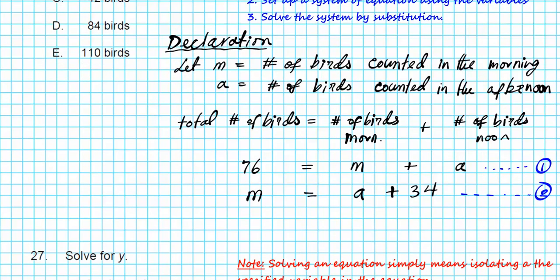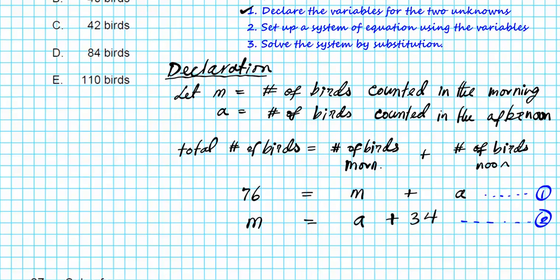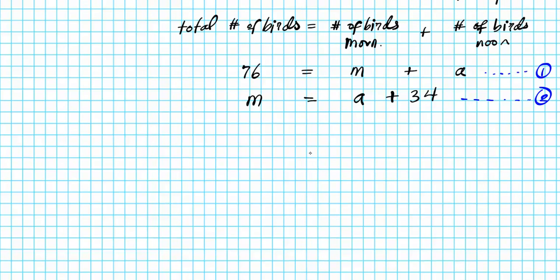We're going to solve this system of equations by substitution. Why are we using substitution here? We've noticed in equation two, one of the variables has been solved explicitly for M. So all we have to do is substitute the value of M into the first equation. Let's substitute A + 34 for M in equation one. We have 76 equals A + 34 plus A.